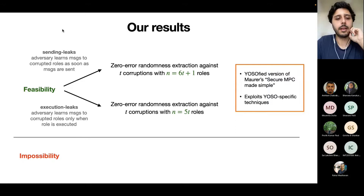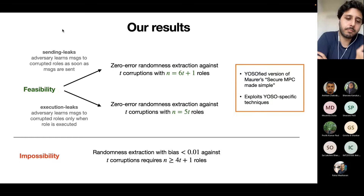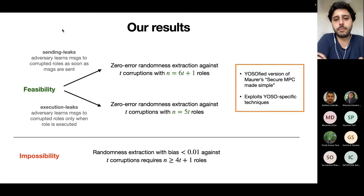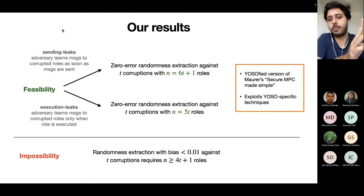In the execution leaks model, we can improve the number of roles from 6T+1 to 5T, so the corruption rate goes from roughly one over six to roughly one over five. To complement this, we proved that if you want randomness extraction with bias lower than say 0.01, you need at least 4T+1 roles — so you cannot do randomness extraction with corruption rates larger than one over four. We still have a gap between positive and negative results, except for the special case of one corruption where the optimal number of roles is five.